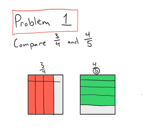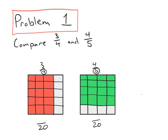I've gone ahead and partitioned three-fourths horizontally into fifths. For four-fifths, I'm going to partition it vertically into fourths. Now if you count up each of the individual parts of both of these area models, you'll see that we've created similar units — both fractions are now represented in twentieths.